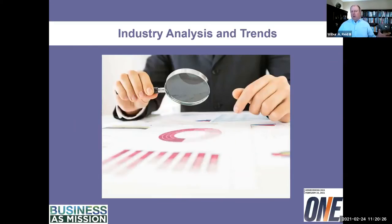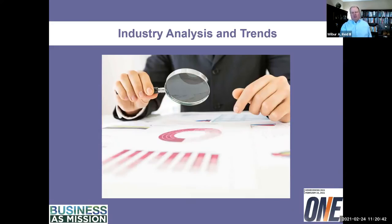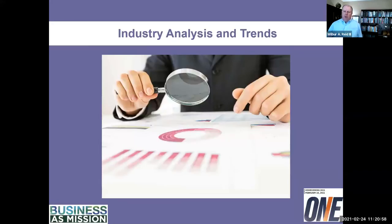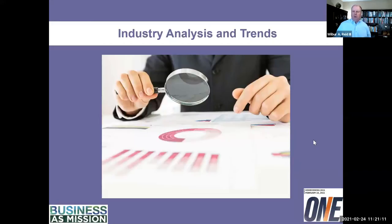The second part is the industry analysis and trends — what's going on in the business? One of the primary interests of Johnson students is coffee shops. If we're going to look at starting a coffee shop, we'd start with Starbucks and Dunkin' Donuts, but also look at local coffee shops and what's going on there. Are coffee shops continuing to grow or have they plateaued and are declining? You want to understand what's going on in the industry you're getting into.